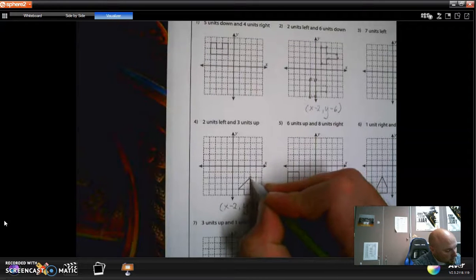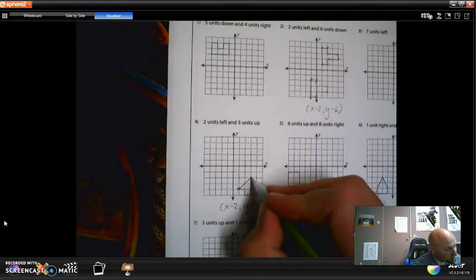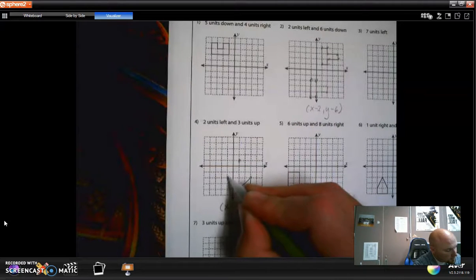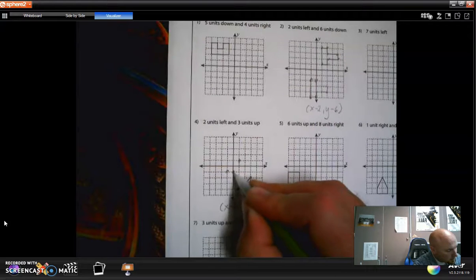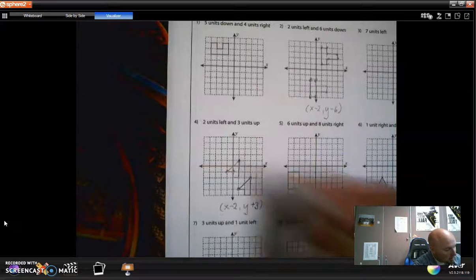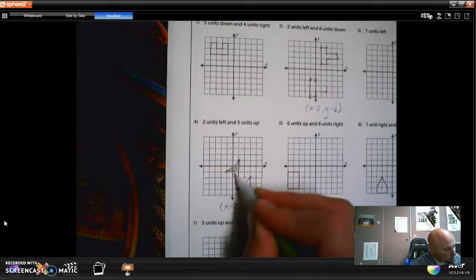So I get each point and I go left two, up three. One, two. One, two, three. One, two. One, two, three. One, two. One, two, three. And I can start seeing my shape form. And so left two, up three, would make this new shape.